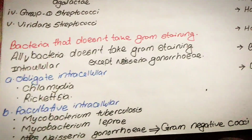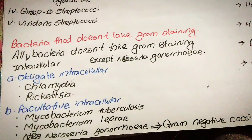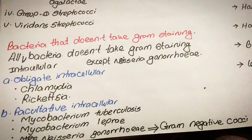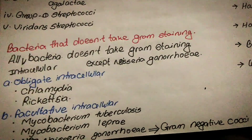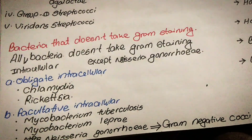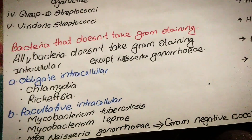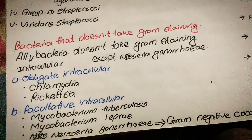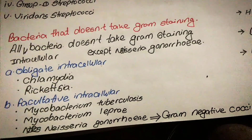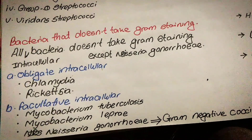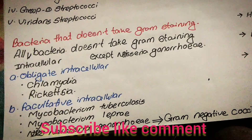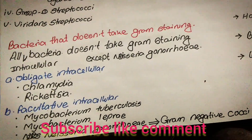There is one important point: bacteria that don't take the Gram stain. With one exception, all intracellular bacteria don't take the Gram stain, except Neisseria gonorrhoeae. Neisseria gonorrhoeae does take the Gram stain and is a gram-negative coccus. Intracellular bacteria are divided into two types: obligate intracellular and facultative intracellular. Inside obligate intracellular there is Chlamydia and Rickettsia, and in facultative intracellular: Mycobacterium tuberculosis, Mycobacterium leprae, and Neisseria gonorrhoeae.